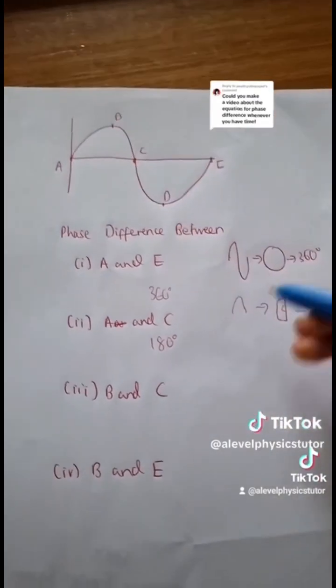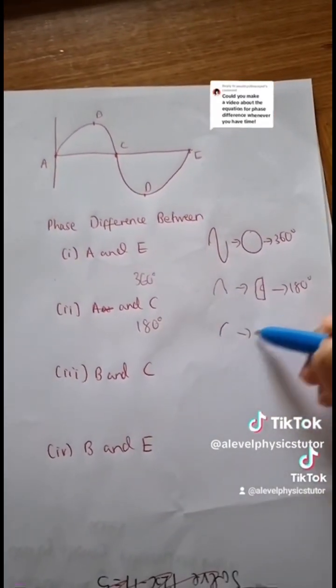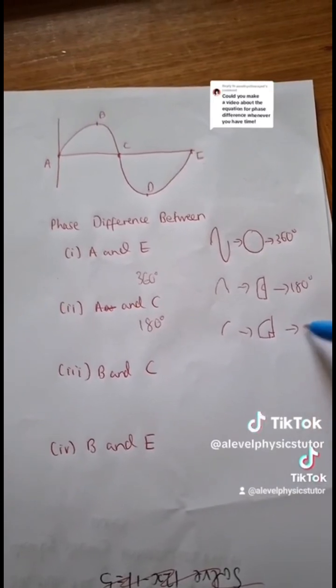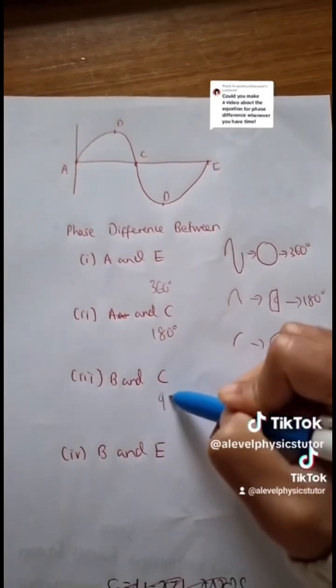Between B and C, that's essentially a quarter of a wavelength. That would correspond to a quarter of a circle, which is essentially a right angle, meaning the phase difference between these two points is 90 degrees.